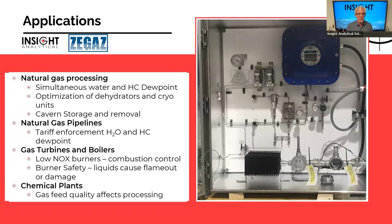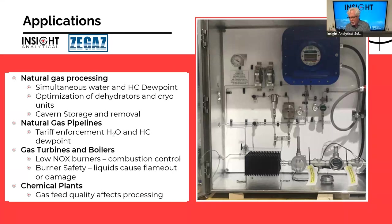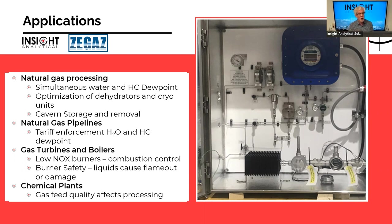Typical applications include natural gas processing — simultaneous water and hydrocarbon dew point for optimization of dehydration units and cryogenic units, and when putting gas into cavern storage or bringing it back out. Natural gas pipelines use it for tariff enforcement on water and hydrocarbon dew points. Gas turbines and boilers use hydrocarbon dew point as it affects low-NOx burners, combustion control, burner safety — flame outs, back propagation of flames. Chemical plants often have water-sensitive catalysts, so customers bringing gas into ammonia or hydrogen generation facilities need to verify dew point specifications are met.